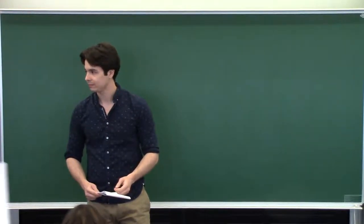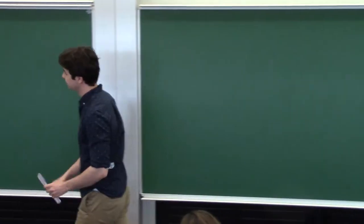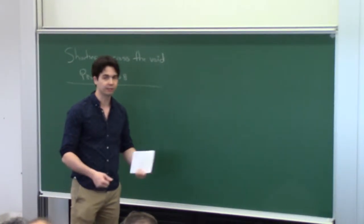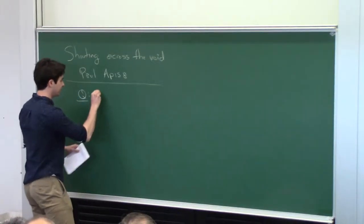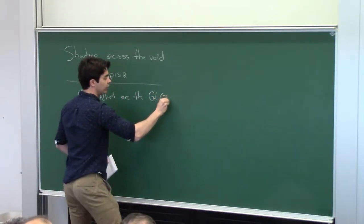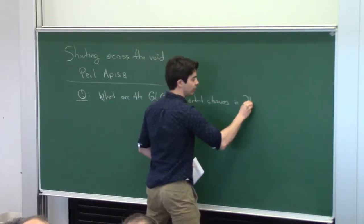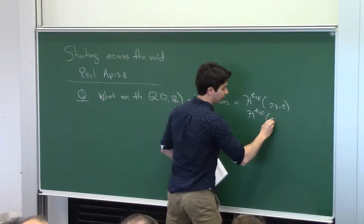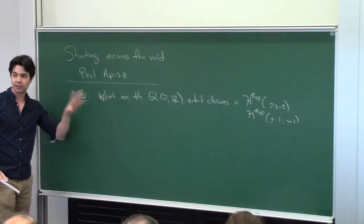The morning session is by Paul Ecoso. So today, I want to talk about a question which will seem similar to one that I've talked about before, but with an important twist. So the question is, what are the GL2R orbit closures in hyperelliptic components of strata? So these two in particular. So this is the question that we'll discuss.